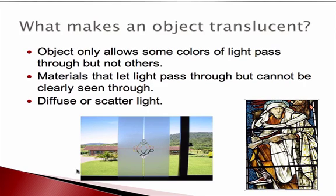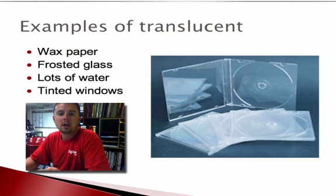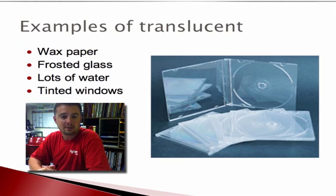Stained glass windows are another great example of translucent objects because light can go through them, but they change the color of light. For example, where the glass is blue, white light hits the window and becomes blue light — only blue light passes through, and all other colors are blocked. Examples of translucent materials include wax paper, frosted glass, large amounts of water, and tinted windows.